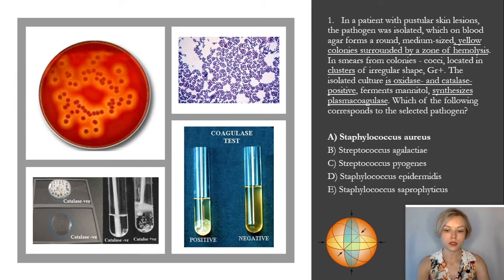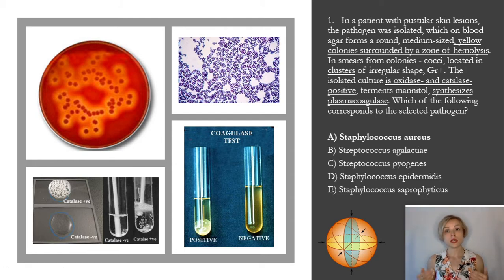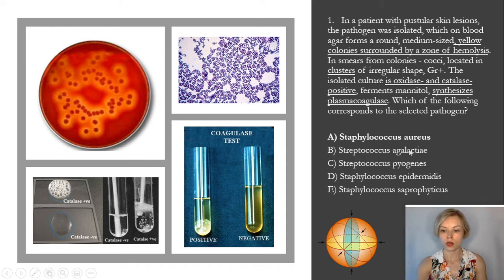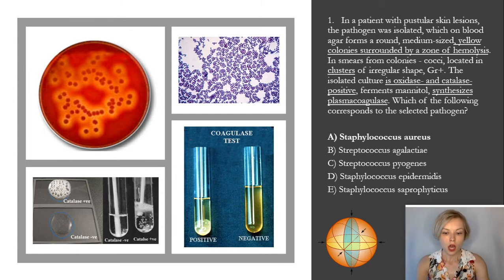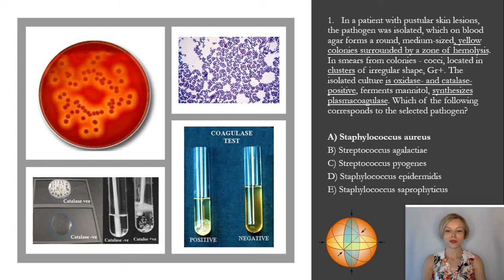Also we can see that this pathogen forms a hemolysis zone on blood agar — you can see it in the photo. Staphylococcus epidermidis and Staphylococcus saprophyticus don't have hemolysins, but Streptococcus agalactiae and Streptococcus pyogenes can also form a hemolysis zone on blood agar because they are beta-hemolytic streptococci. Beta hemolysis is complete hemolysis. Also, our pathogen is oxidase negative and catalase positive — this is typical for staphylococci, but streptococci are catalase-negative microorganisms.